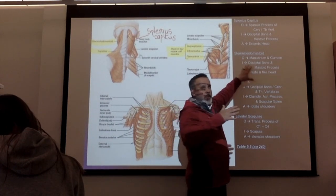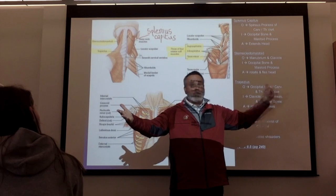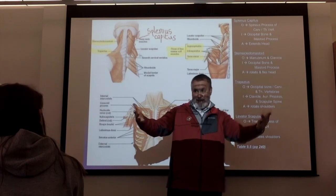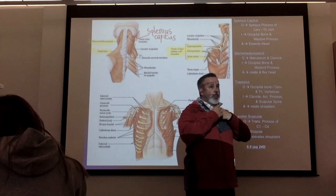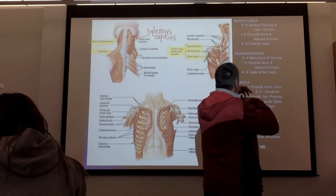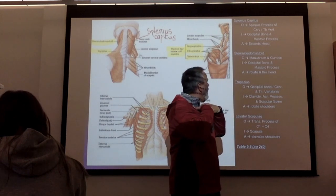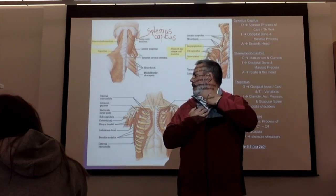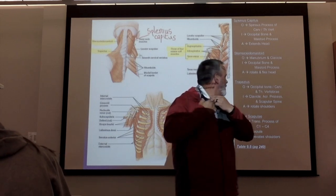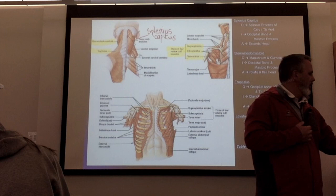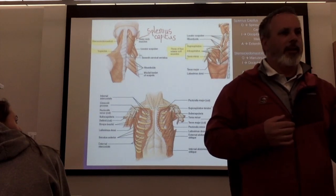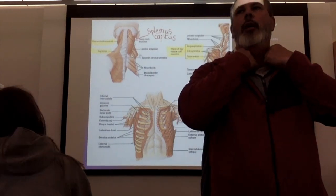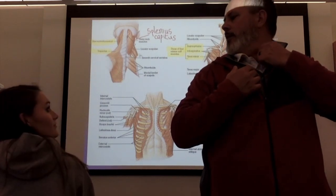Sternocleidomastoid — one of my favorite muscles because of its name. It's associated with the sternum, clavicle, and mastoid process. It originates in the manubrium and clavicle, and inserts in the occipital bone and mastoid process. It's this muscle that pops out when you turn your head — the sternocleidomastoid.